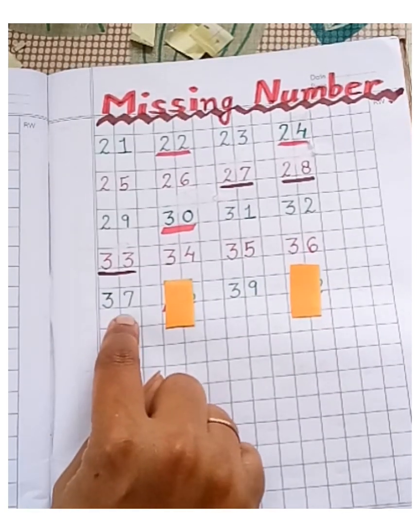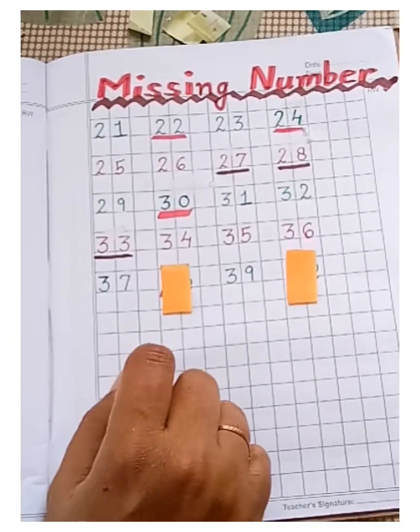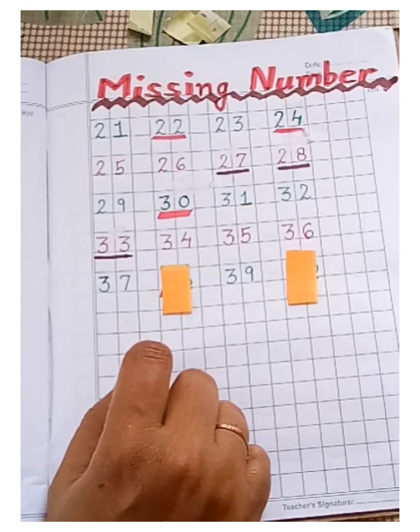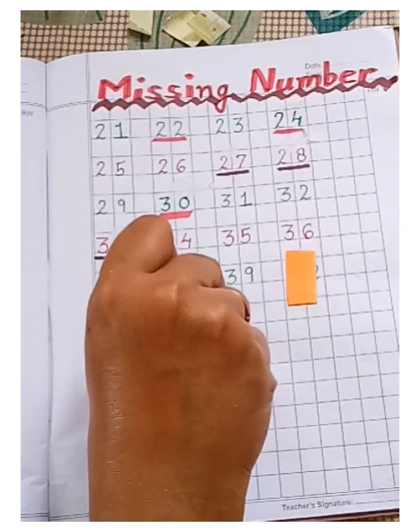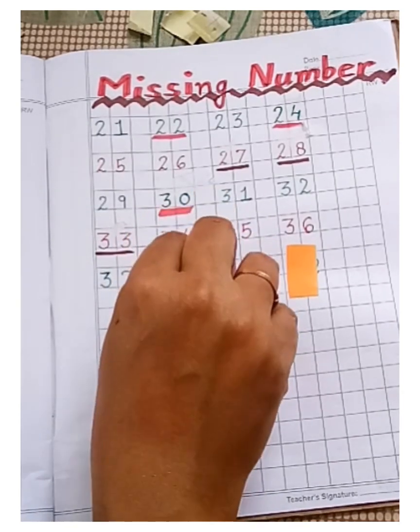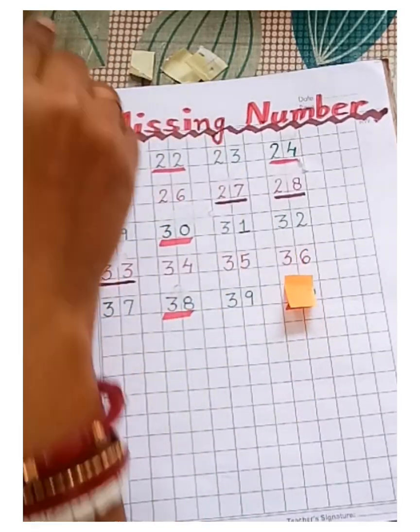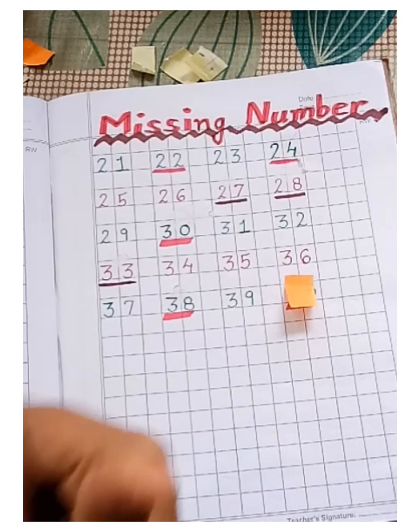37. So, again one number is missing. Let's find out. It's 38. Very good.